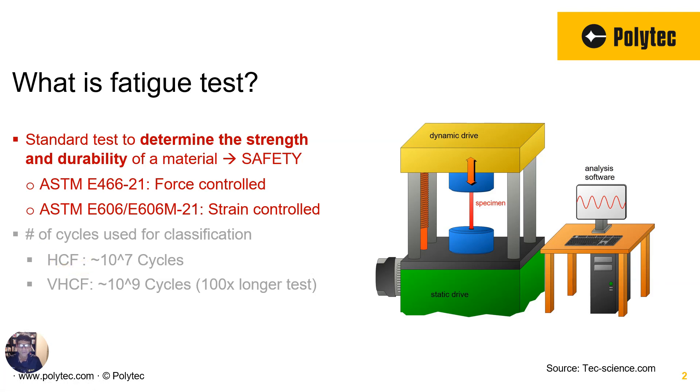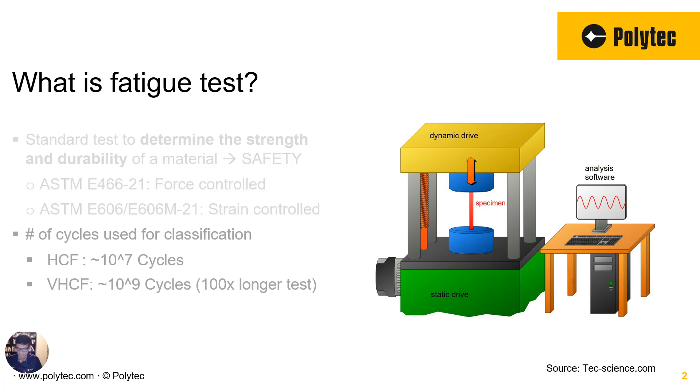There is increasing request and demand from the industry to extend the test to a billion cycles. Now, if we are talking about keeping the frequency the same, you can imagine then that we are 100xing basically the testing time can go up by 100 times in this case. So that's the high cycle and the very high cycle fatigue test defined based on the number of cycles being tested.